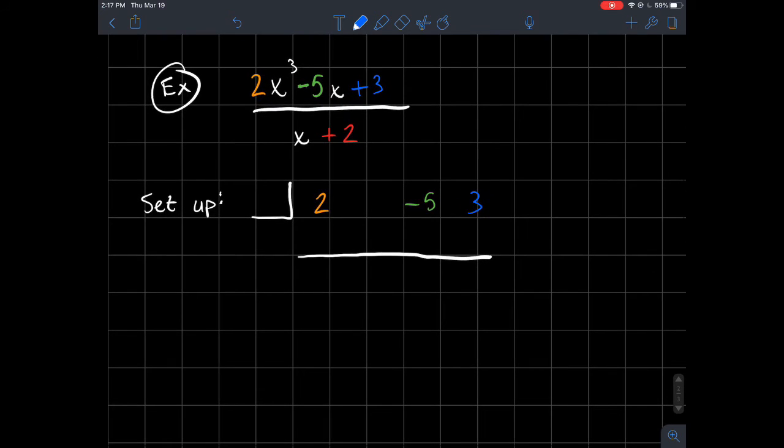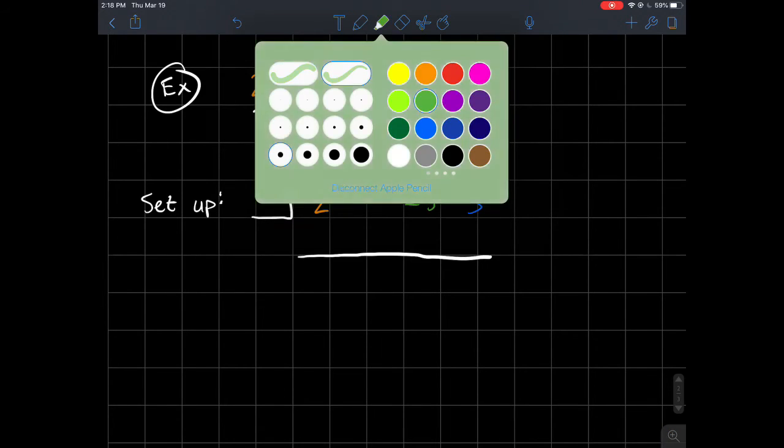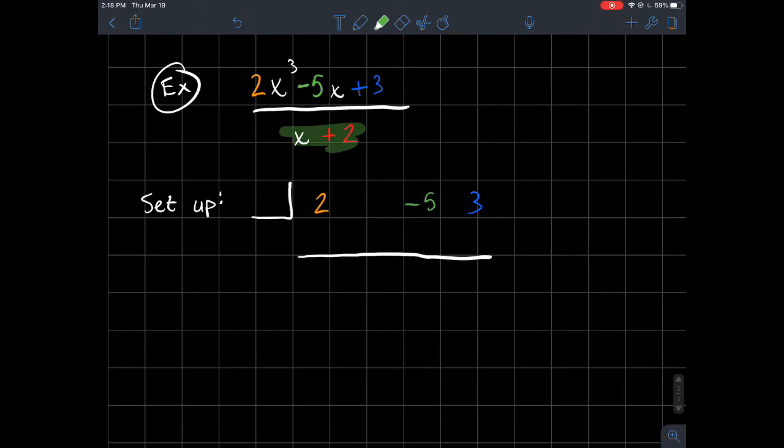So I want to do 2x cubed minus 5x plus 3 divided by x plus 2. Now there's a few things that's going on here. One thing that you might notice that's happening, x plus 2 here, that doesn't have the form x minus c. In other words, we've got to be careful. What is c, right? What should go here in this box? And what should go in that box? If you think about, this is the same thing as x minus negative 2. So negative 2 needs to go in that box. Maybe I shouldn't use the color blue. Maybe I'll use the color red. So negative 2 needs to go there. Because again, you're always translating this into x minus something.